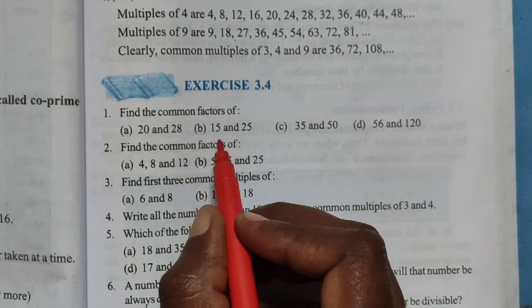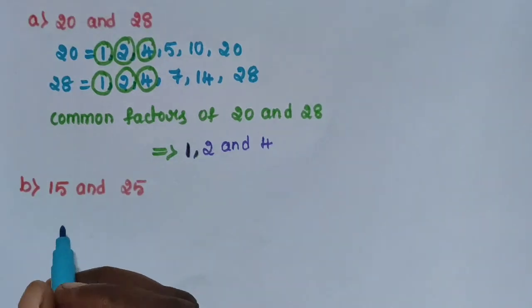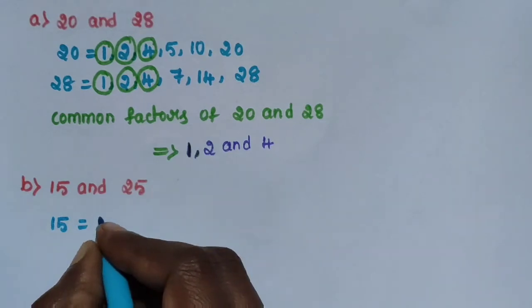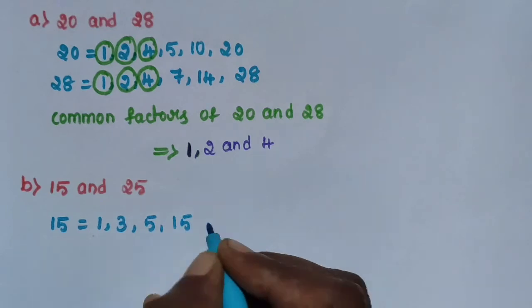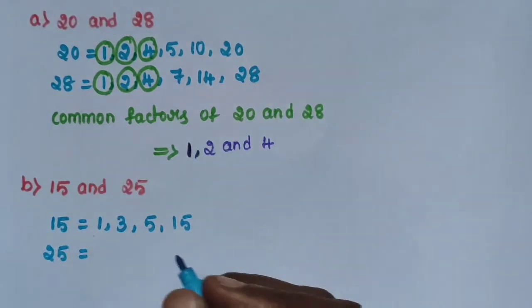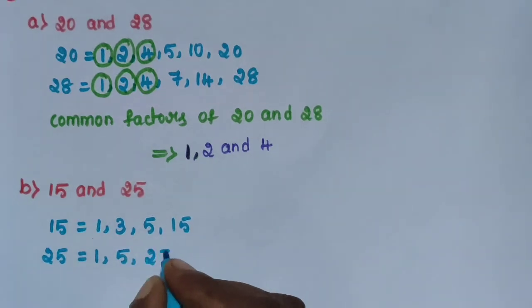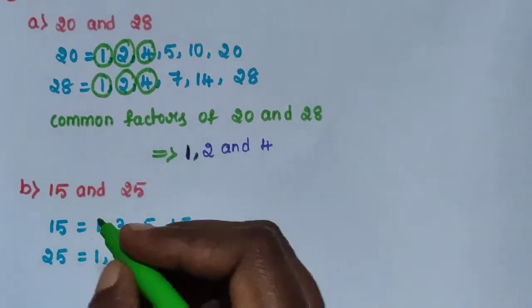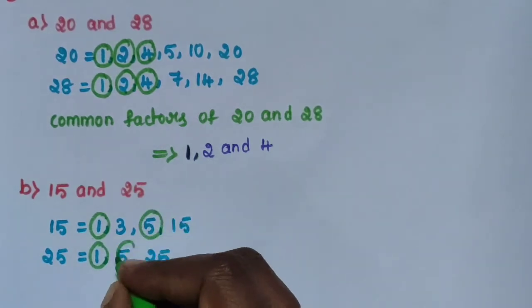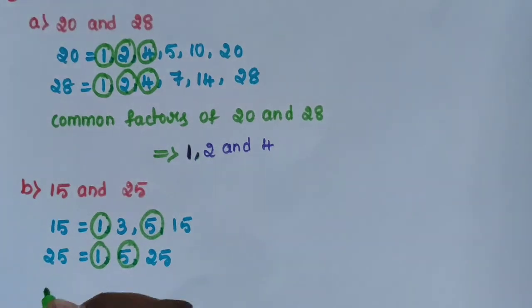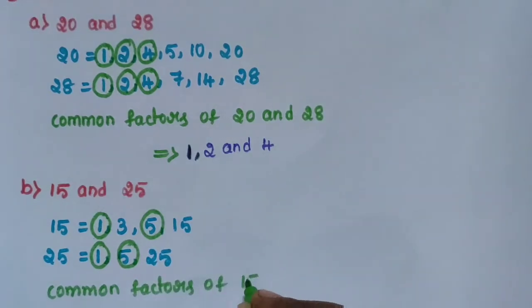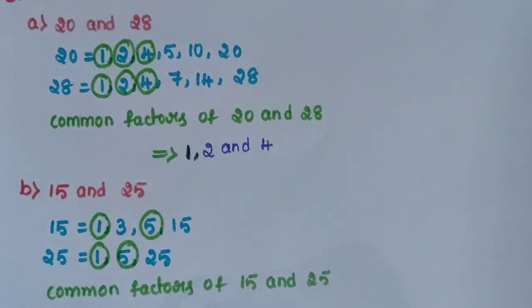Sub-question B: 15 and 25. Factors of 15 are 1, 3, 5, 15. Factors of 25 are 1, 5, 25. The common factors of 15 and 25 are 1 and 5.